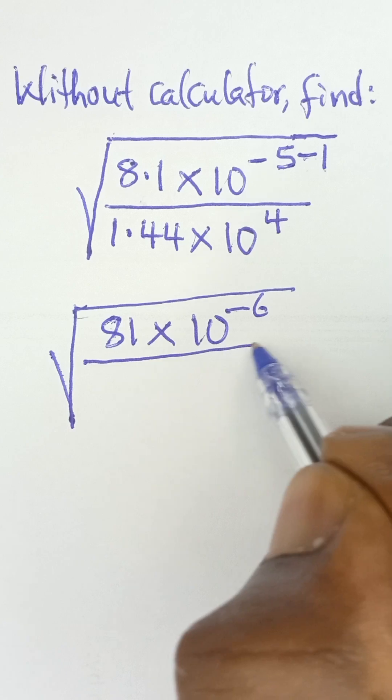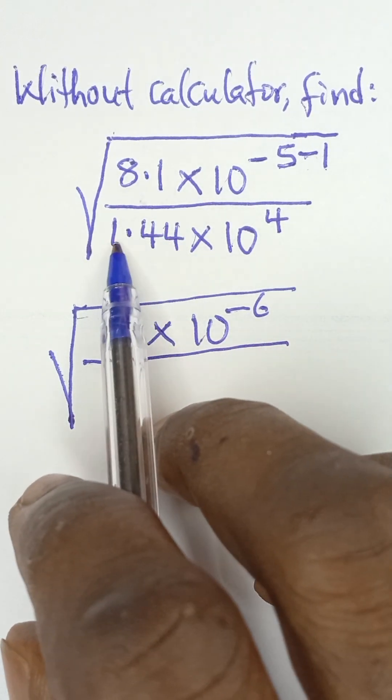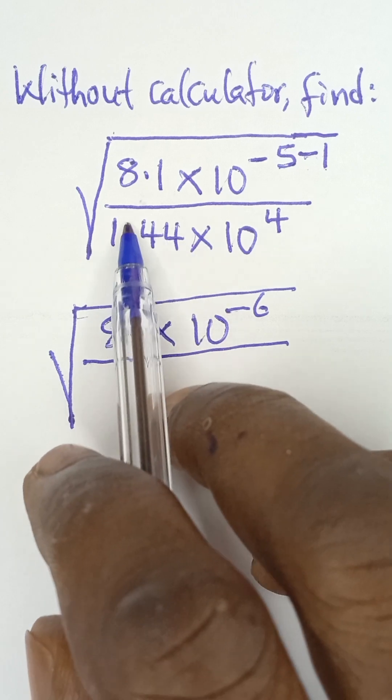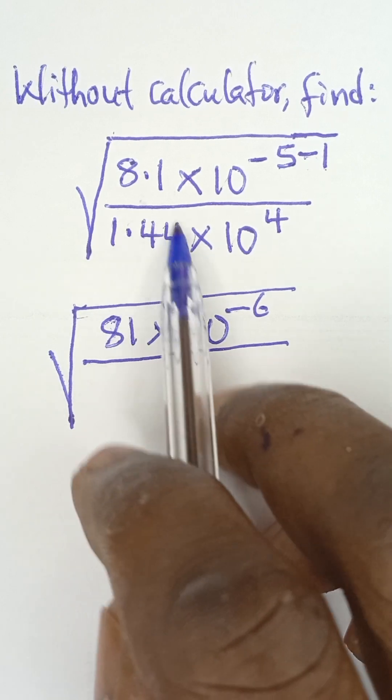And then all over, this is 1.44. So for me to make this 144 so that it becomes a whole number which is a perfect square, I have to move this decimal point twice. So 1, 2.